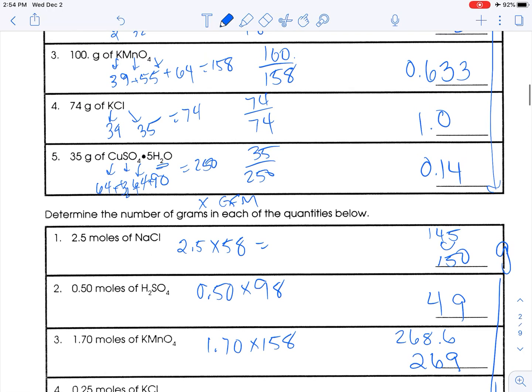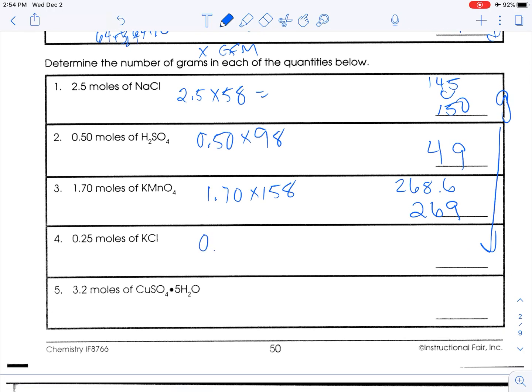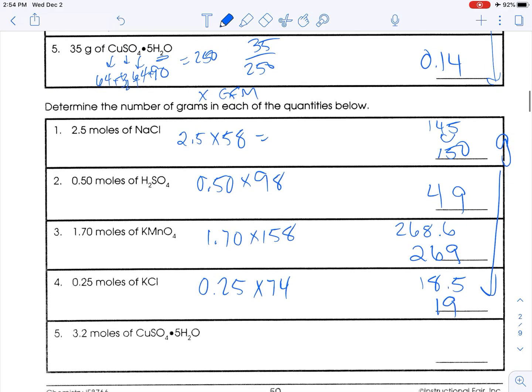Potassium chloride is 74. So 0.25 times 74 is 18.5. Before sig figs - if you're rounding to sig figs, that should be 19 grams.